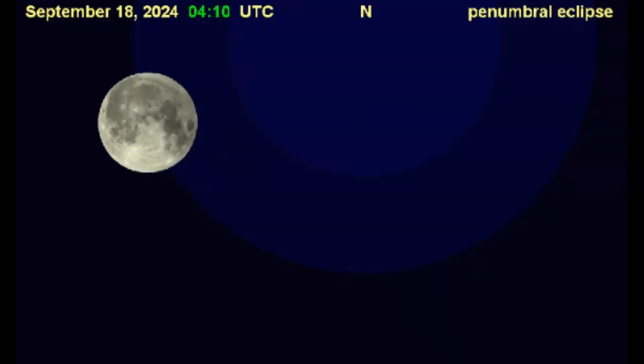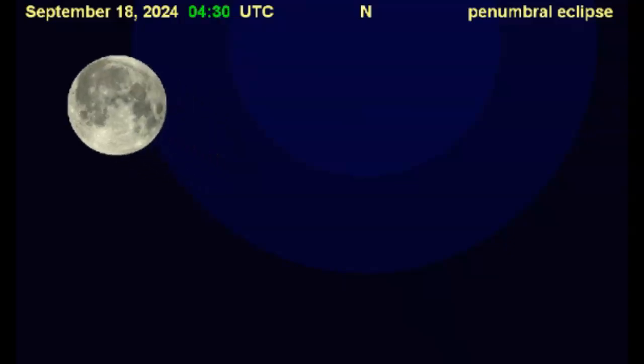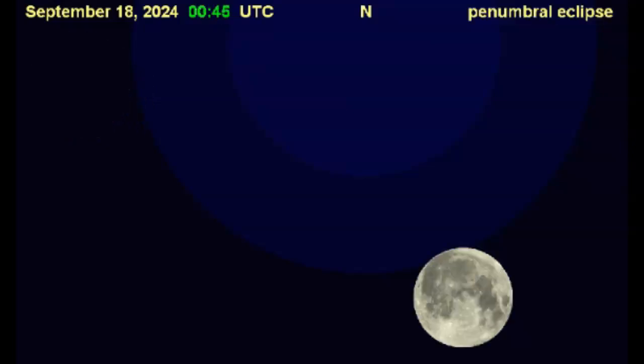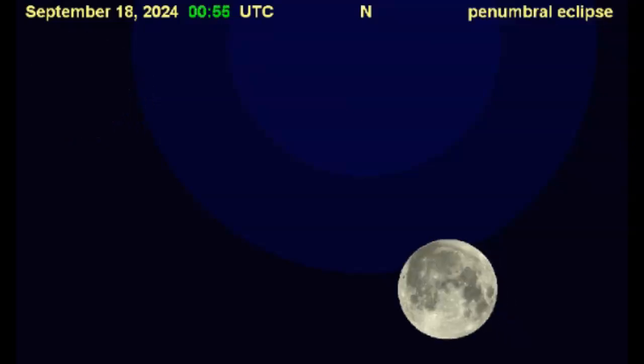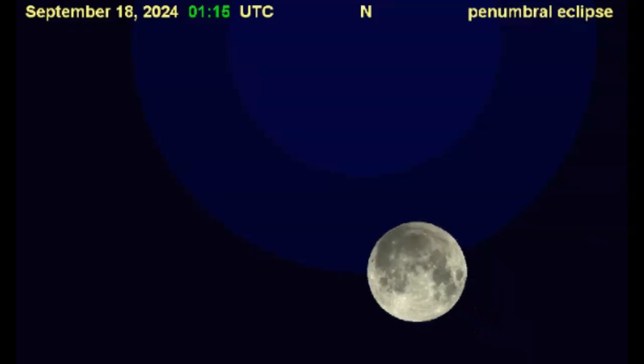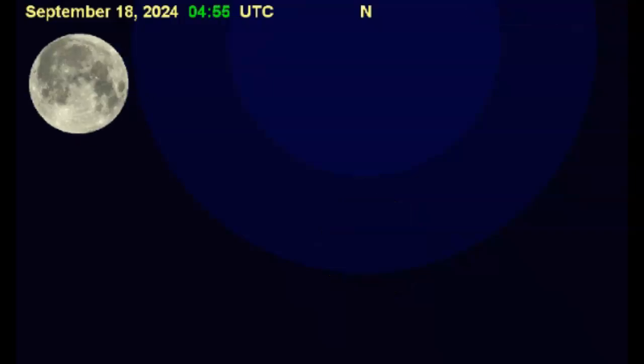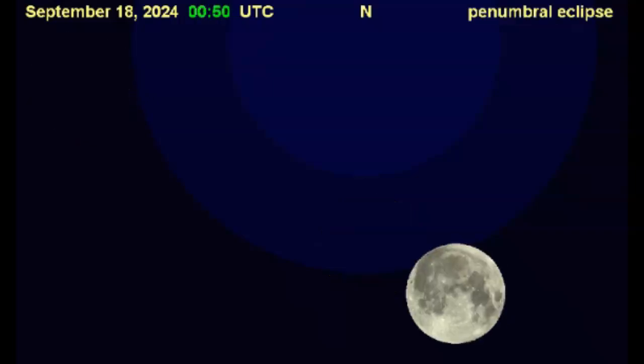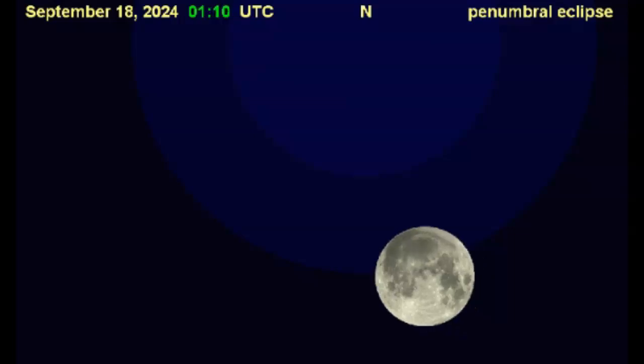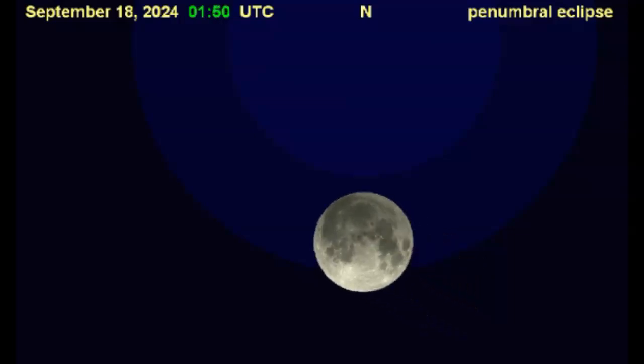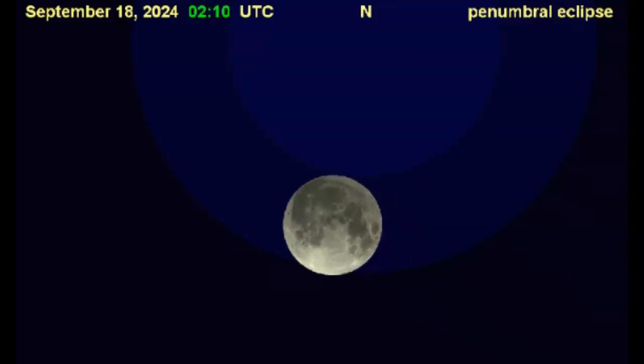Peak eclipse hours occur at 10:44 Eastern time tomorrow night, September 17th, when a little more than 8% of the moon will be in shadow. That's Eastern time. For folks in the Central time zone, that would be 6:44 in the evening, not even dark yet. Again, tomorrow September 17th when more than 8% of the moon will be in shadow.